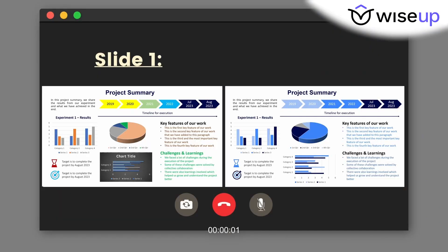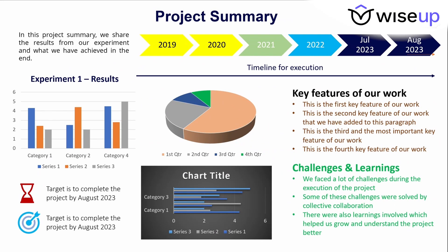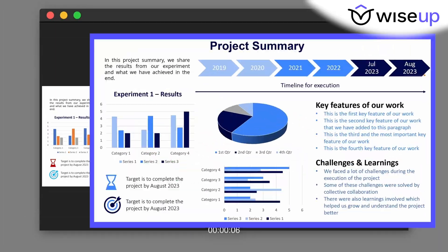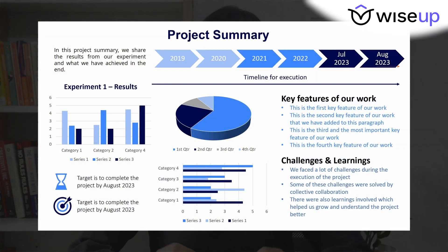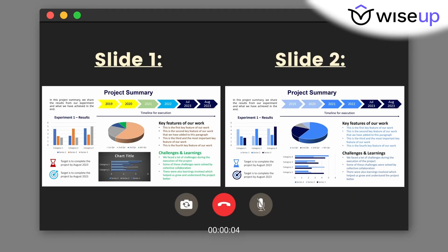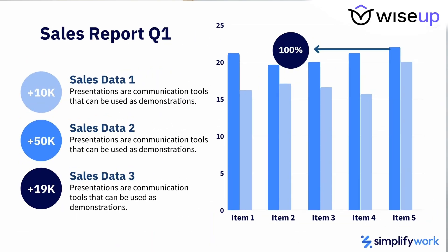Look at these two slides — which one do you think looks more attractive, the first slide or the second slide? Well, you guessed it: the second one is clearly the winner. But why is that? Because the text and pictures are exactly the same. The reason is a strong color theme.